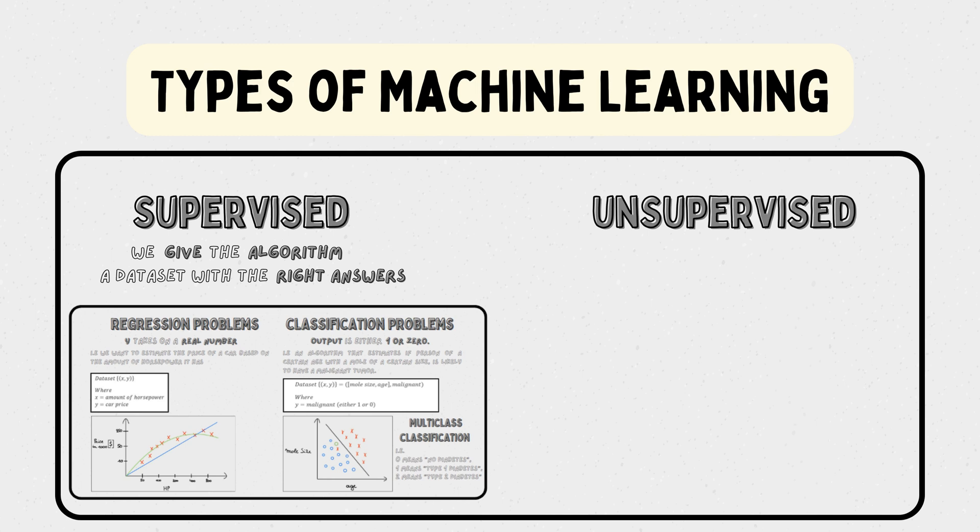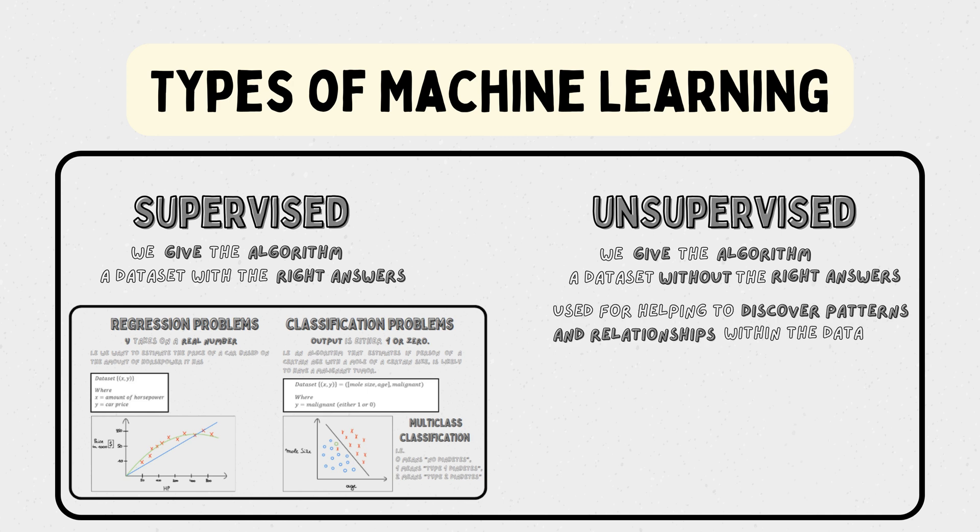Now that we have seen supervised learning, let's take a look at what unsupervised learning means. Unsupervised learning deals with unlabeled data, meaning that we give the algorithm a dataset without the right answer. It is used for helping to discover patterns and relationships within the data. Now, the learning algorithm only receives the data and based on this data, it needs to find some structure in the dataset.